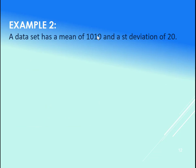So we're back to the mean of 1,010, a standard deviation of 20. So let's say we have a mean of 1,010, a standard deviation of 20.